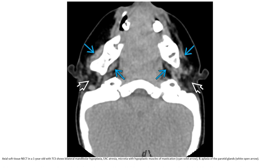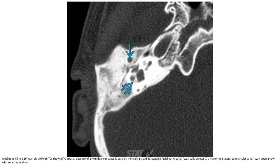Axial soft tissue non-contrast CT in a 1-year-old girl with Treacher Collins syndrome, showing bilateral mandibular hypoplasia, EAC atresia, microtia, with hypoplastic muscle of mastication, and hypoplasia or aplasia of the parotid gland. Axial bone CT in a 16-year-old girl with Treacher Collins syndrome: EAC atresia, absent middle ear space and ossicles, ventrally placed descending facial nerve canal, and malformed lateral semicircular canal.